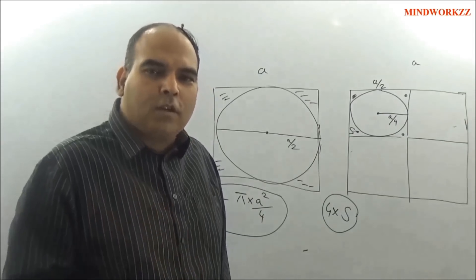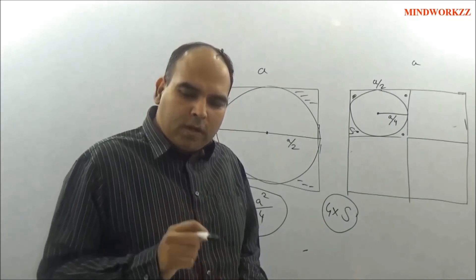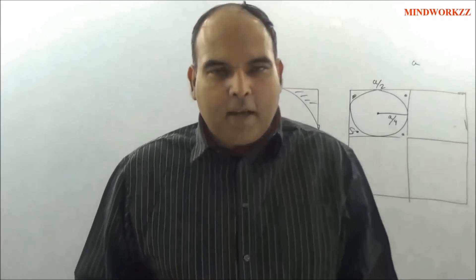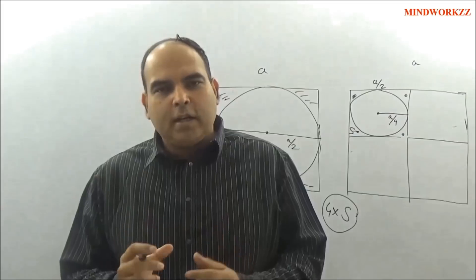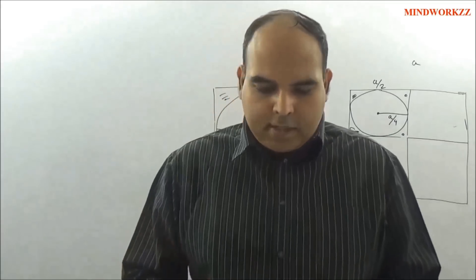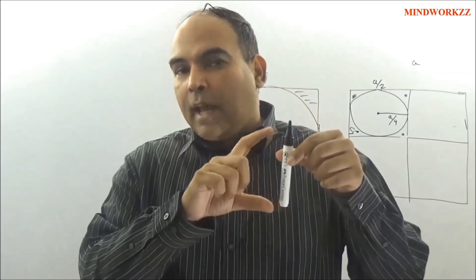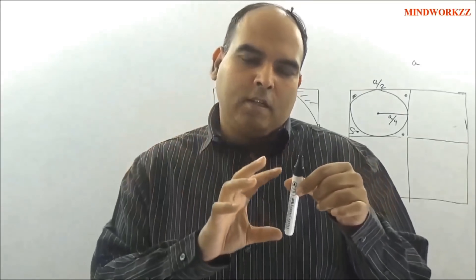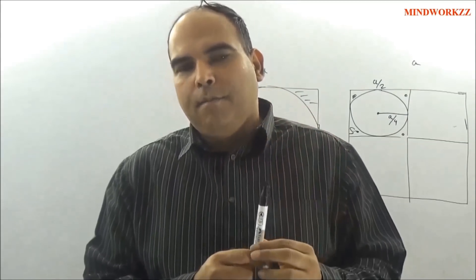I picked up this question because it has a 15-second approach, and that approach is based on similarity. You need to understand similarity before solving this question. Unfortunately, we have been taught similarity only for triangles, but similarity is not restricted to triangles — it exists for any two objects. A similar object looks exactly the same but can have a different size; all length ratios are expanded or contracted in the same ratio.